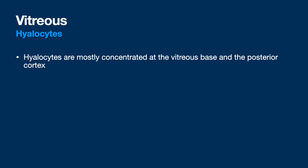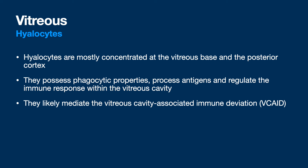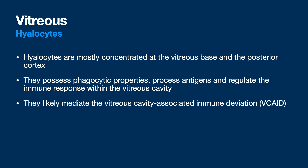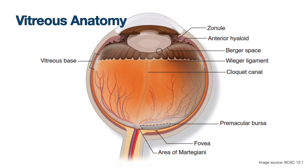Hyalocytes are concentrated mostly on the vitreous base and the posterior cortex. They possess phagocytic abilities, process antigens, and are responsible for the vitreous cavity's associated immune deviation. The vitreous cavity has one just like the anterior chamber. They consume oxygen and are removed during vitrectomy, and they may also be involved in epiretinal membrane formation.